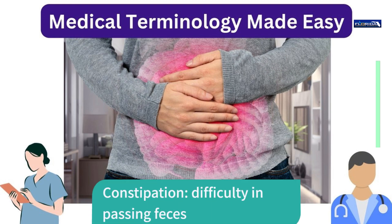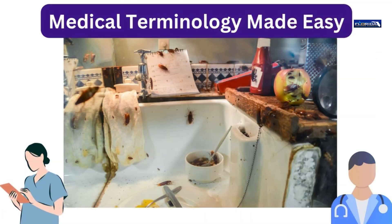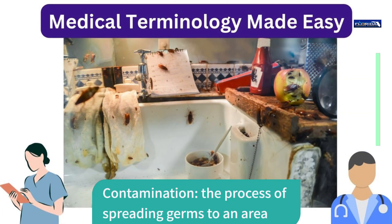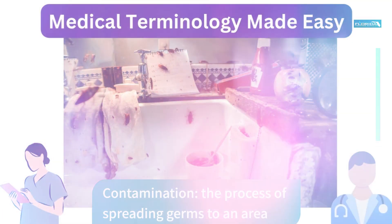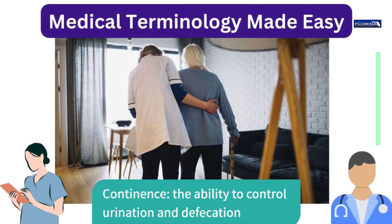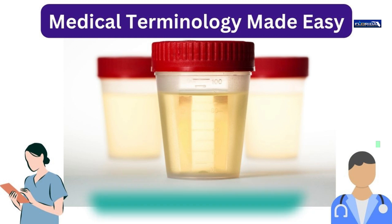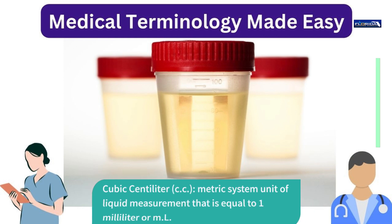Constipation: difficulty in passing feces. Constrict: to make narrow. Contamination: the process of spreading germs to an area. Continence: the ability to control urination and defecation. Contraction: shortening of the muscles due to lack of exercise. Cubic centiliter (cc): a metric system unit of liquid measurement equal to 1 milliliter or ml.